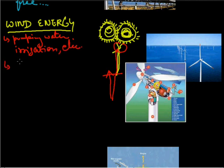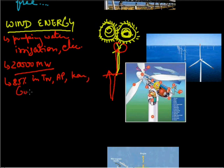In India, we have 20,000 megawatt potentiality to produce wind energy. 85% sites with a potential of 4500 megawatt have been identified in Tamil Nadu, Andhra Pradesh, Karnataka, Gujarat, Kerala, Maharashtra and Lakshadweep.